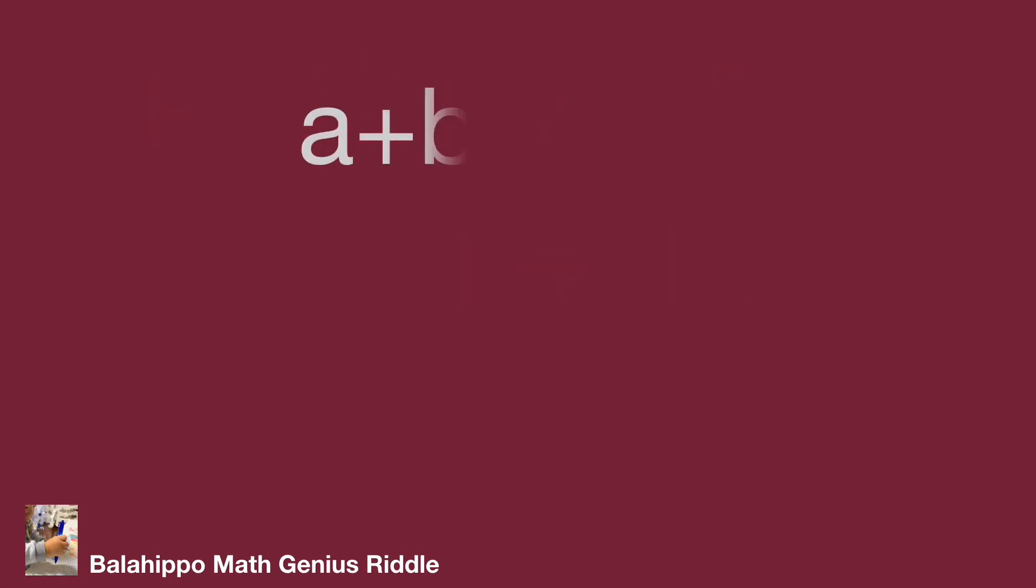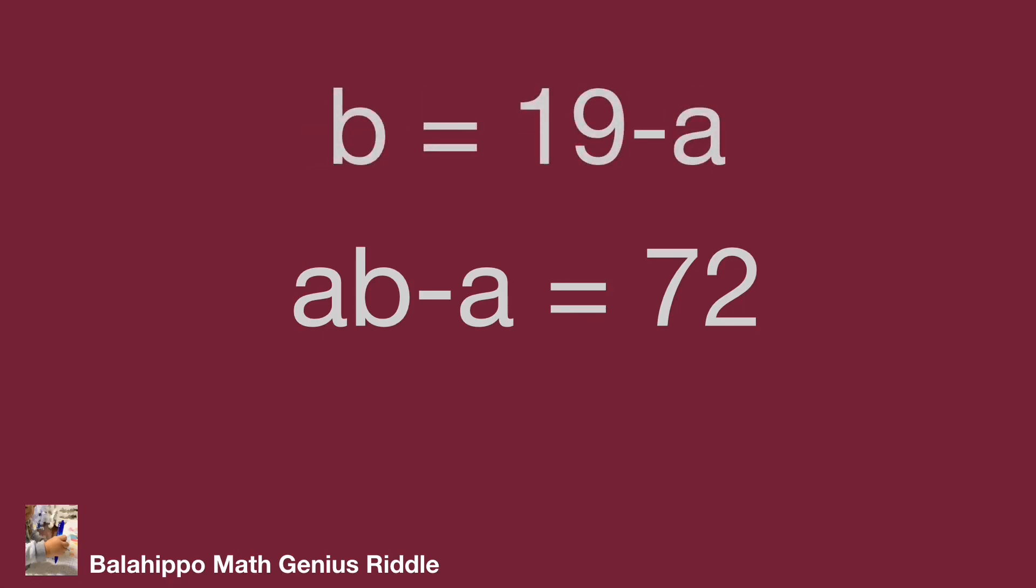We just got a + b = 19 and ab - a = 72. From a + b = 19, we get b = 19 - a.